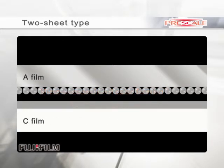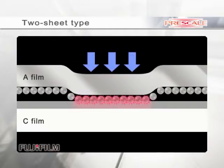When pressure is applied to the external surfaces of the sandwiched A and C-films, micro-capsules on the A-film are destroyed, which interact with the color-developing layer on the C-film. The color-developing layer changes its color to red chemically.